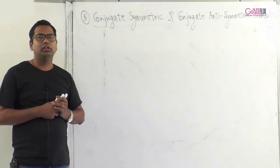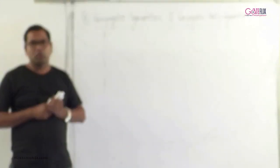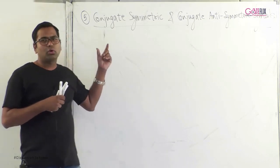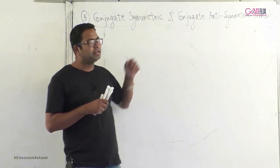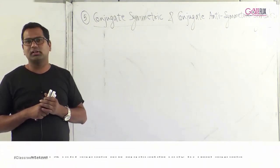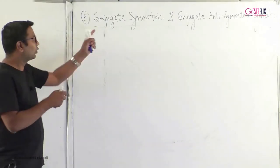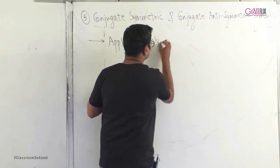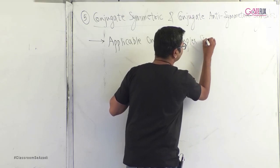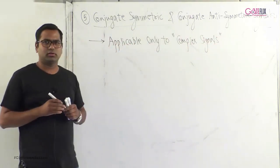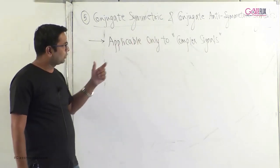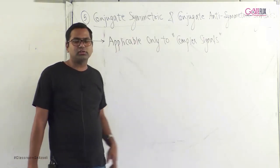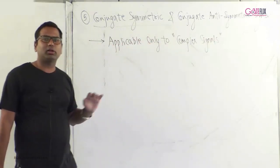The next classification is conjugate symmetric and conjugate anti-symmetric signals. These are very similar to even and odd signals. However, while even and odd apply only to real signals, conjugate symmetric and conjugate anti-symmetric classification is applicable only to complex signals.